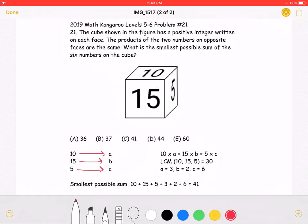As it says in the problem, the products of the two numbers on opposite faces are the same. This means that 10 times A must be equal to 15 times B, which is equal to 5 times C.